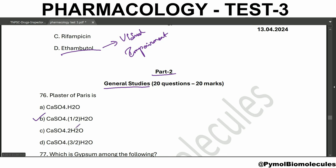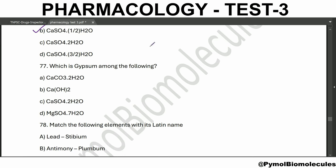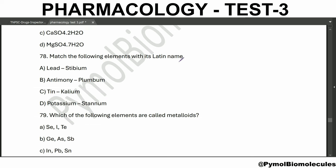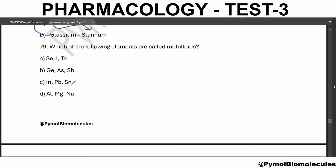Plaster of Paris is calcium sulfate hemihydrate. These are previous year questions. Gypsum is calcium sulfate dihydrate. Match the following elements with their Latin names: lead is plumbum, antimony is stibium, tin is stannum, potassium is kalium. The following elements are called metalloids - option B.